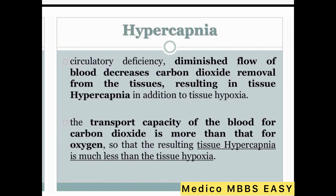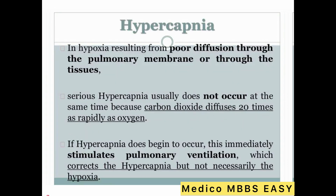Circulatory deficiency causes diminished flow of blood and decreased carbon dioxide removal from the tissue, resulting in tissue hypercapnia in addition to tissue hypoxia. The transport capacity of the blood for carbon dioxide is more than that of oxygen, so the resulting tissue hypercapnia is much less severe than the tissue hypoxia.